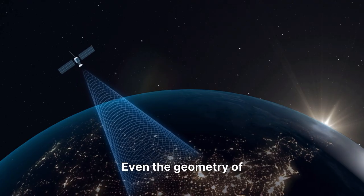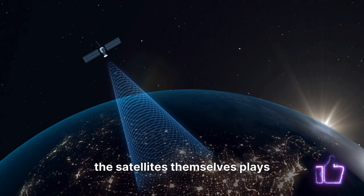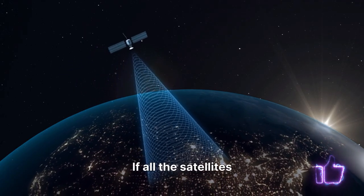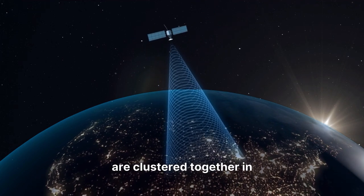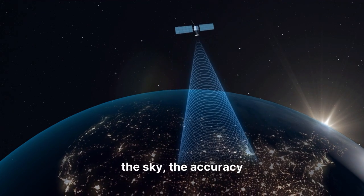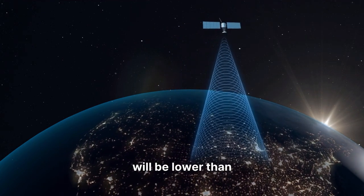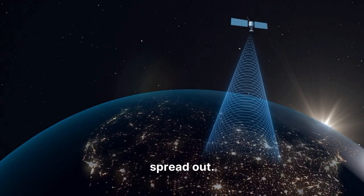Even the geometry of the satellites themselves plays a role. If all the satellites your receiver is tracking are clustered together in the sky, the accuracy will be lower than if they are widely spread out.